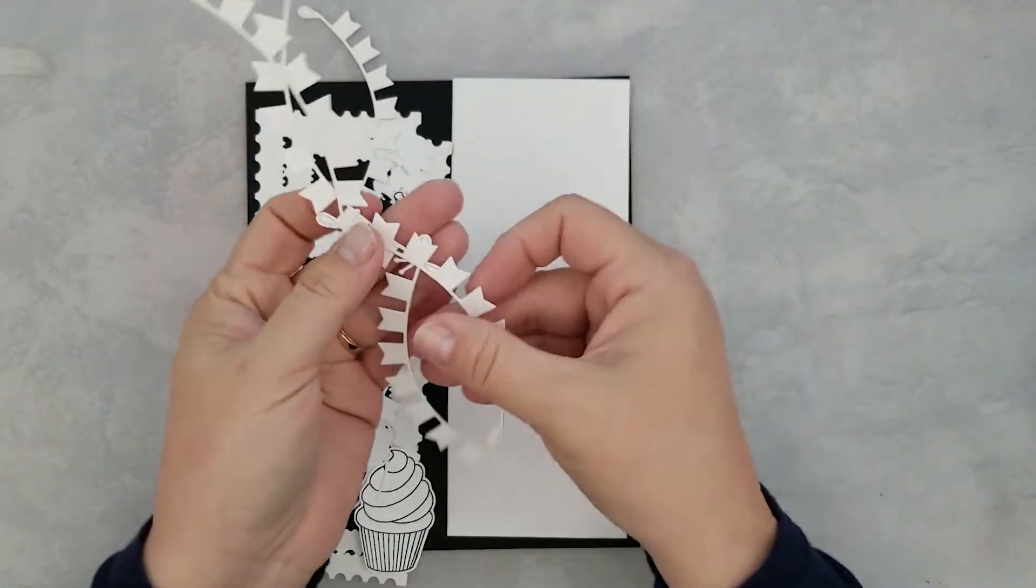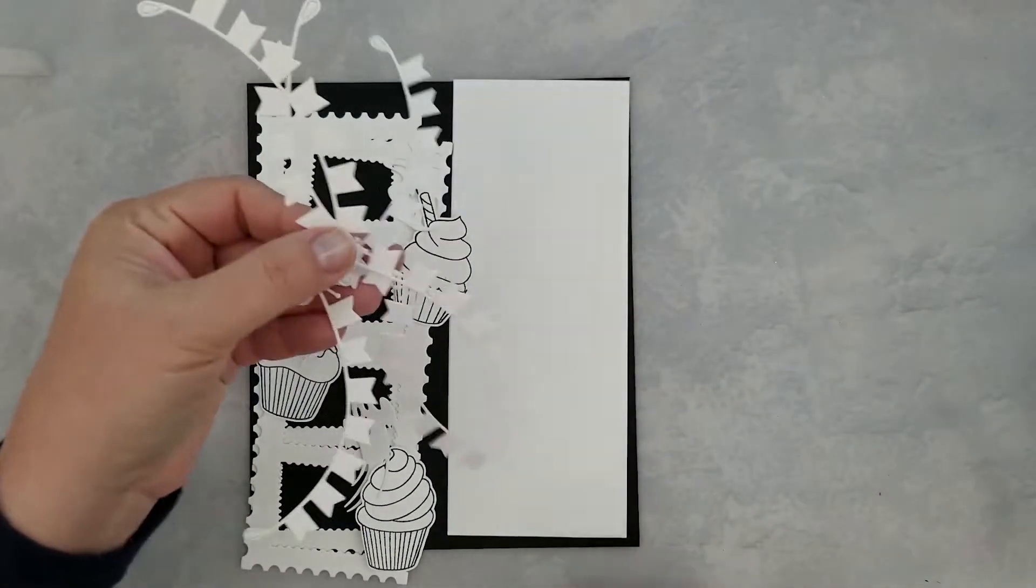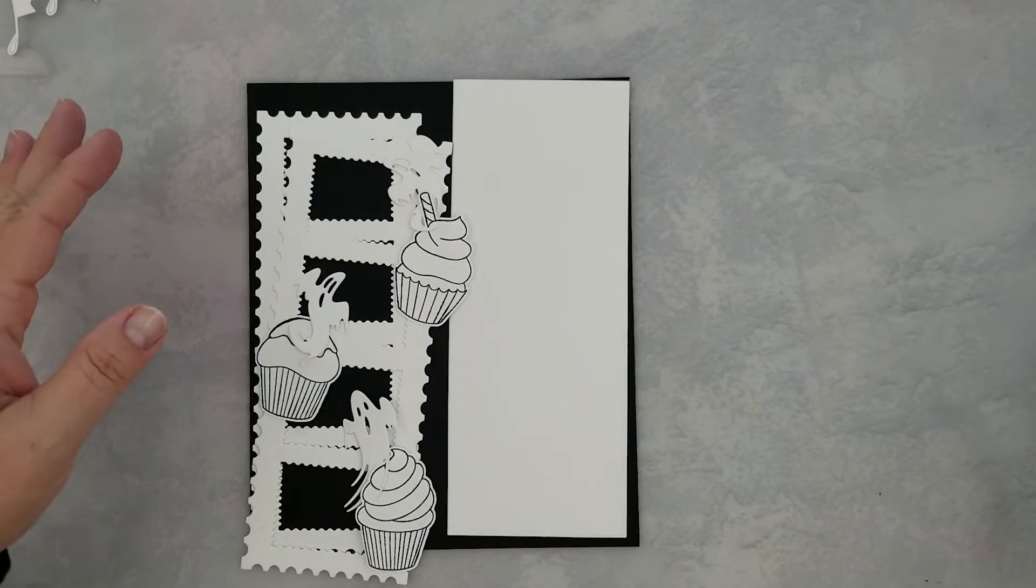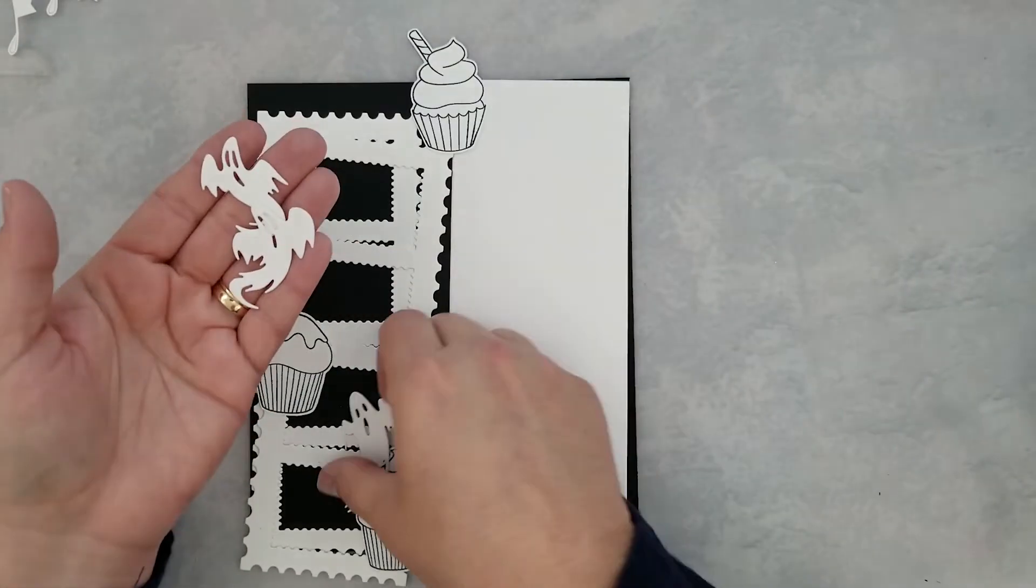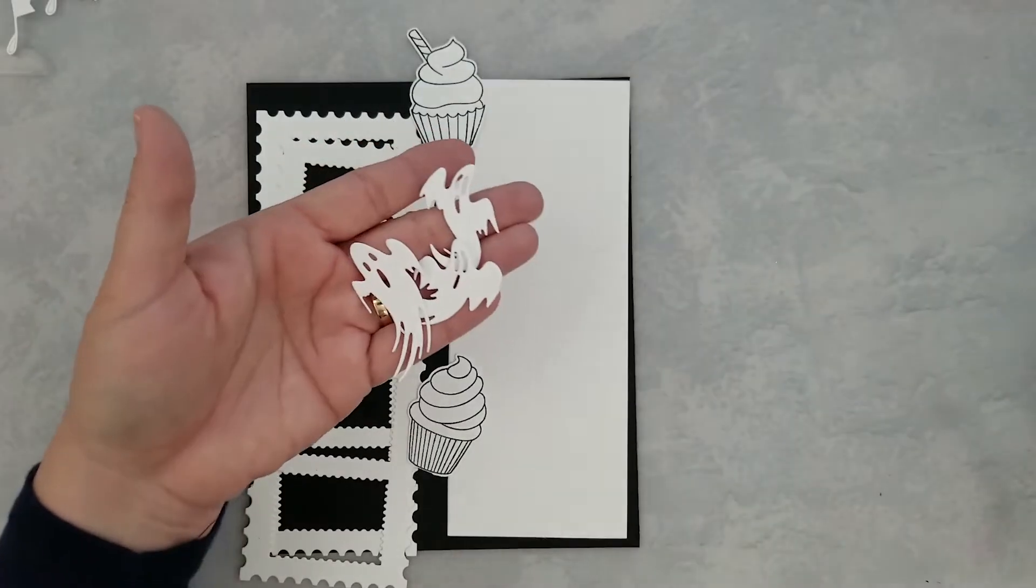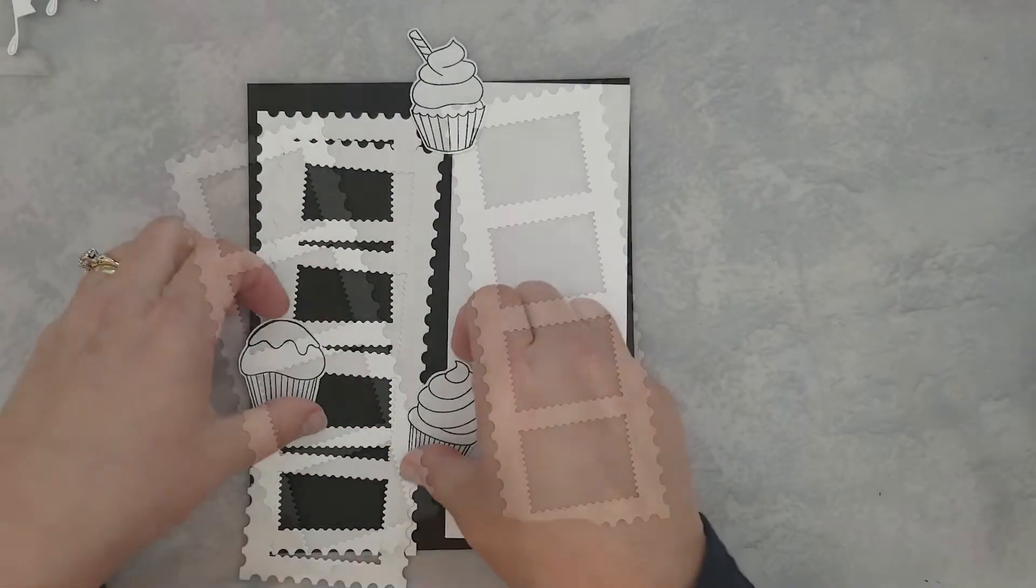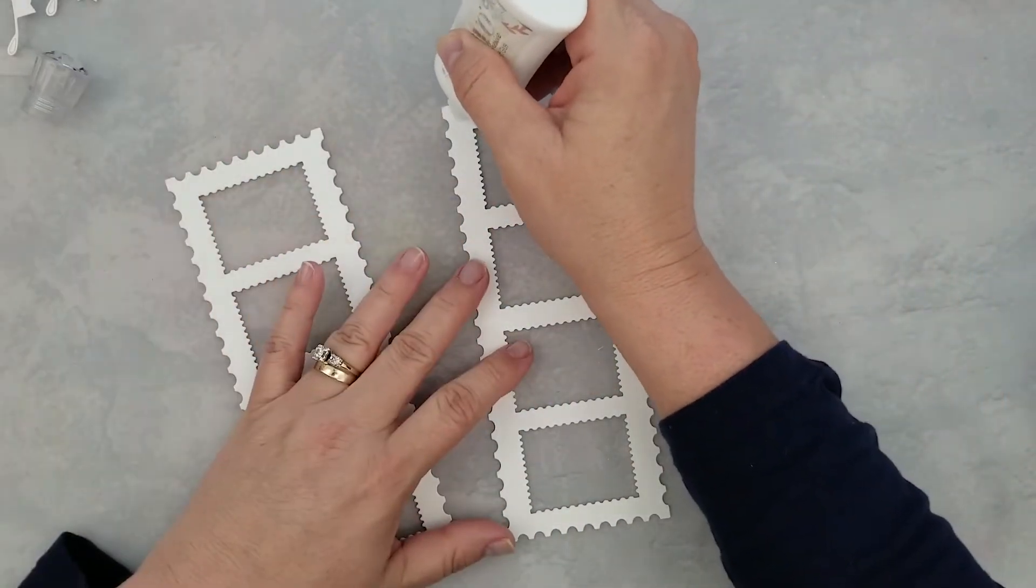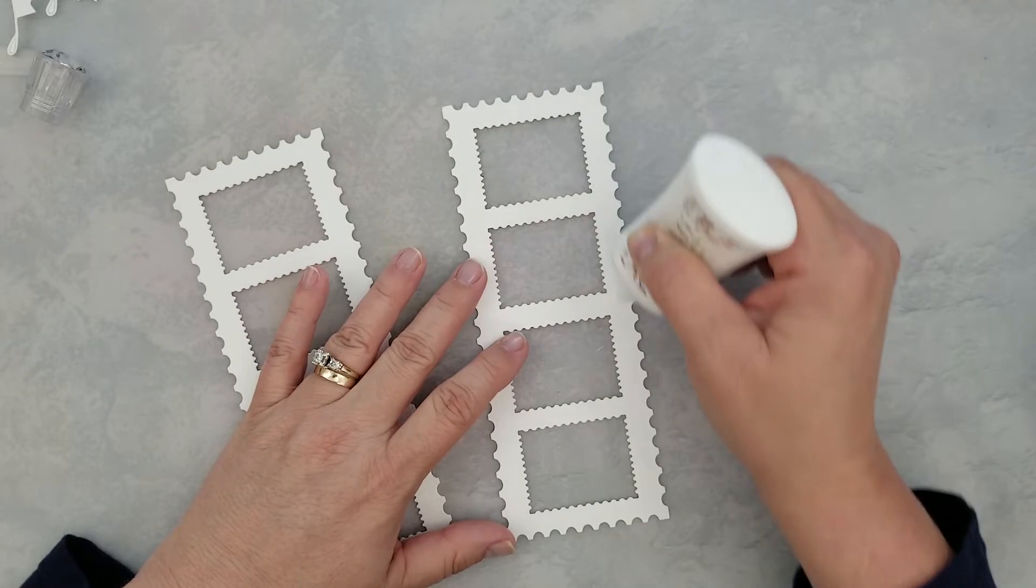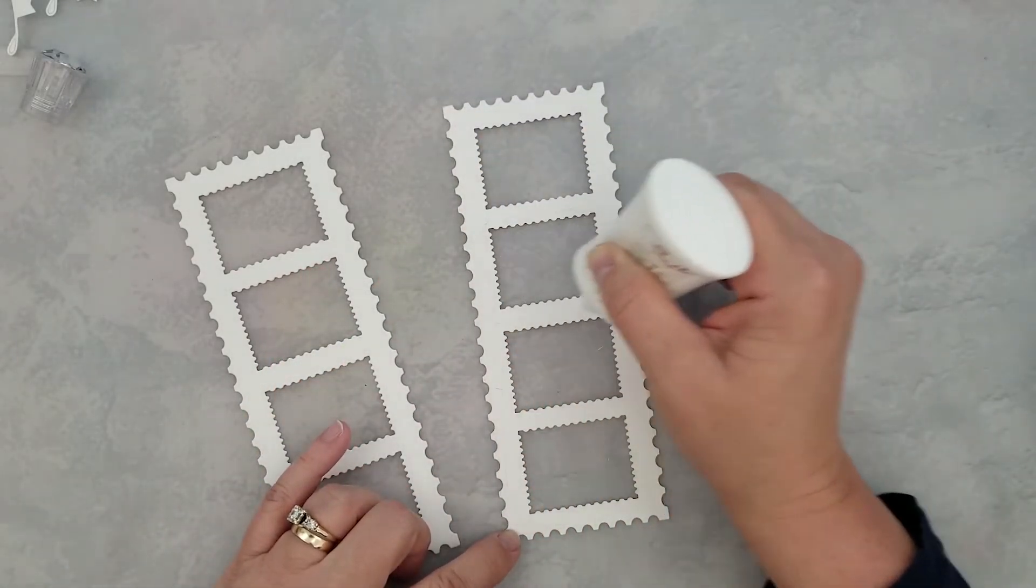I have my bunting and the ghost already die cut. I have the slimline postage die cut here, and I ran my stamped images through my scan and cut. I did cut two of those slimline postage dies. I'm going to use a little bit of liquid adhesive so I can stack these together. I will set these aside and let them dry while I do some Copic coloring and get into the details of the hop.